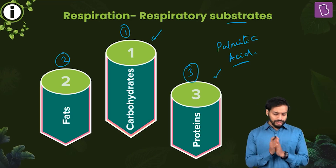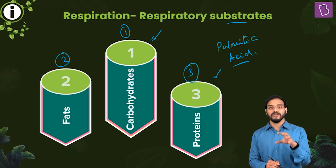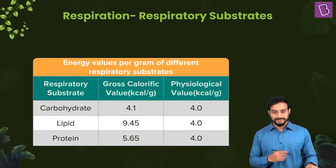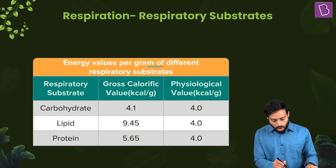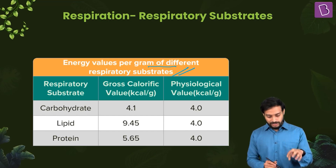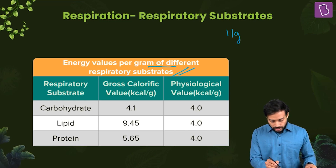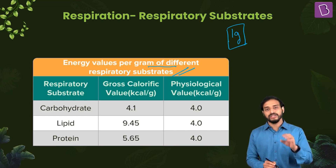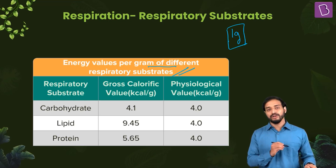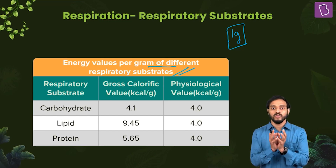The question is: how much energy is provided by each of these molecules — is it the same or different? Let's figure this out. The energy values per gram of different respiratory substrates show the amount of energy liberated after complete oxidation of these substances. This is measured per gram of each respiratory substrate in a bomb calorimeter, which is used to measure the energy released.